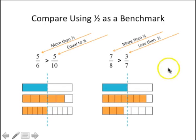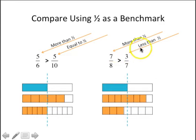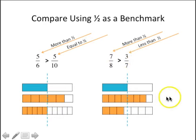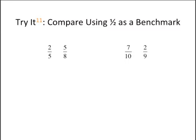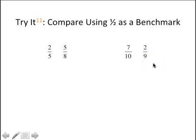I can use one-half as a benchmark for this comparison as well. Seven-eighths is more than one-half — four-eighths would be equivalent to one-half, so seven-eighths is more. Three-sevenths is less than one-half — half of seven would be three and a half, so three-sevenths is just a little bit less than one-half. So I'm looking at a fraction greater than one-half and a fraction less than one-half, and that makes the comparison easy. On number eleven on your guided notes, use one-half as a benchmark to compare two-fifths and five-eighths, and seven-tenths and two-ninths. Pause, make those comparisons, and come back.